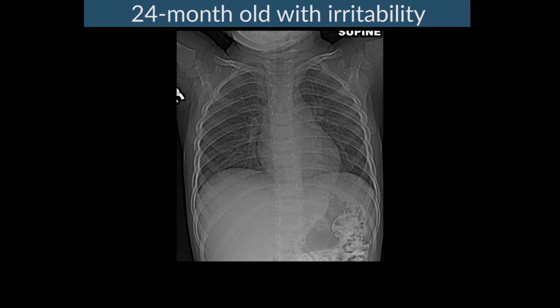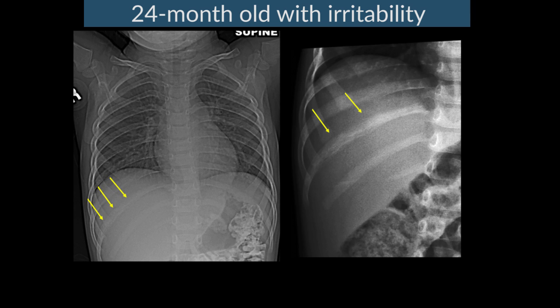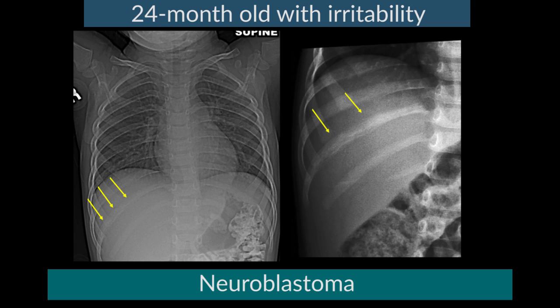Another child presents at two years of age with irritability. What appears to be initially a normal chest x-ray reveals, on closer inspection of the right 11th rib, that the rib density is mottled and irregular and different from the other ribs. A close-up shows a rib that is sclerotic and eroded by an overlying neuroblastoma. These are very important but often subtle findings in the pediatric chest.